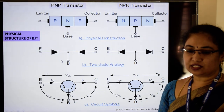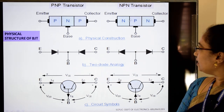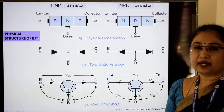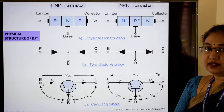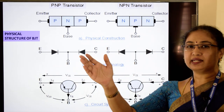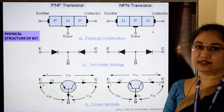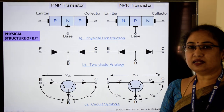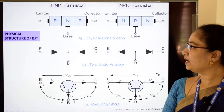Let us see the physical structure of a bipolar junction transistor. There are two kinds: NPN transistors and PNP transistors. In an NPN transistor, a P-type material is sandwiched between two N-type materials — we have P material in the middle layer and two N-type materials on the extreme sides. In a PNP transistor, N-type material is sandwiched between two P-type materials.